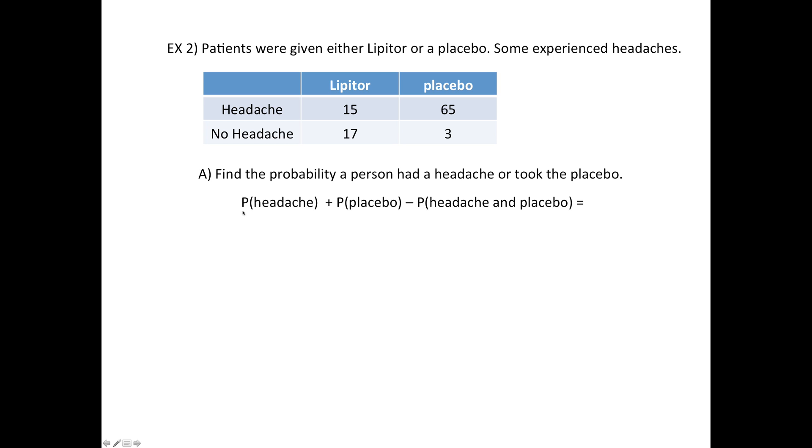Here we have headache people—this 15 and 65—so that's 80 headache people. The placebo people, that's going to be 65 plus 3. But then those people that had a headache and placebo, these 65, they just got double counted.